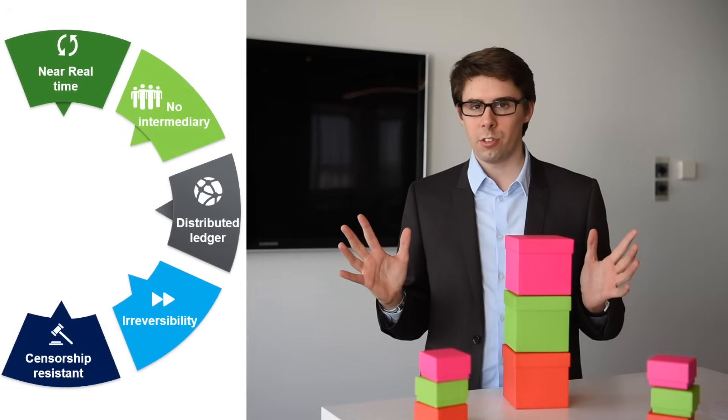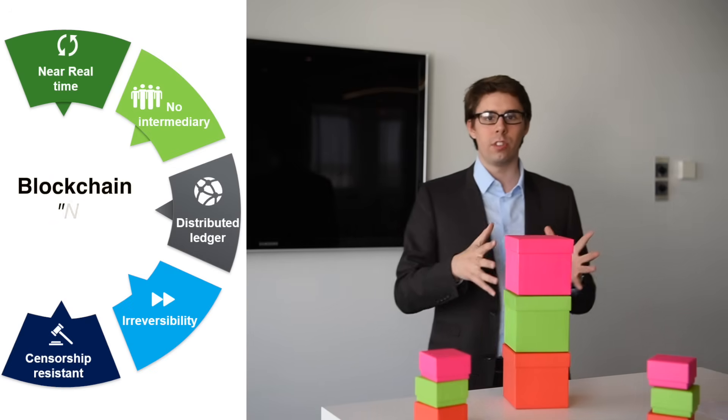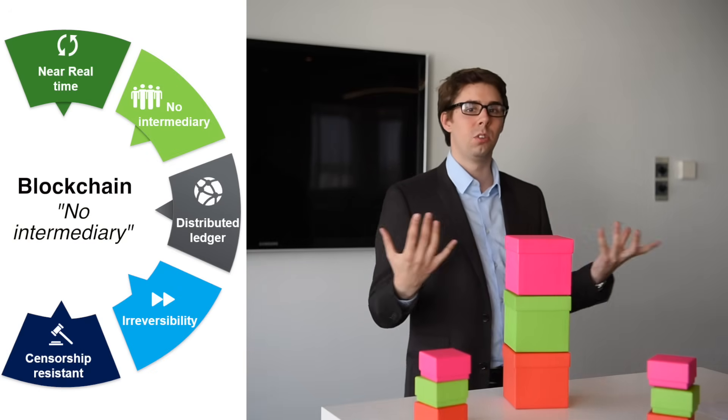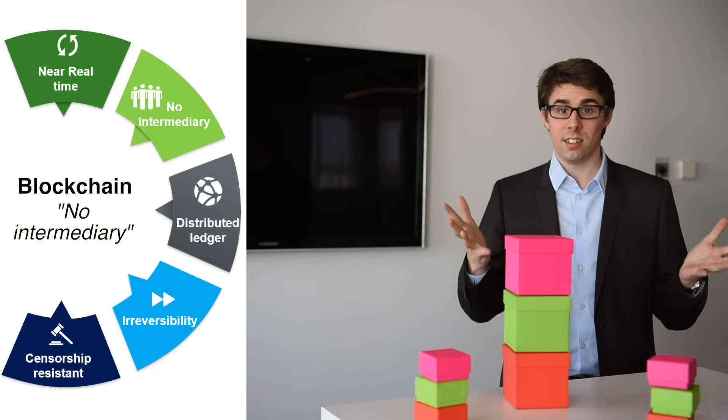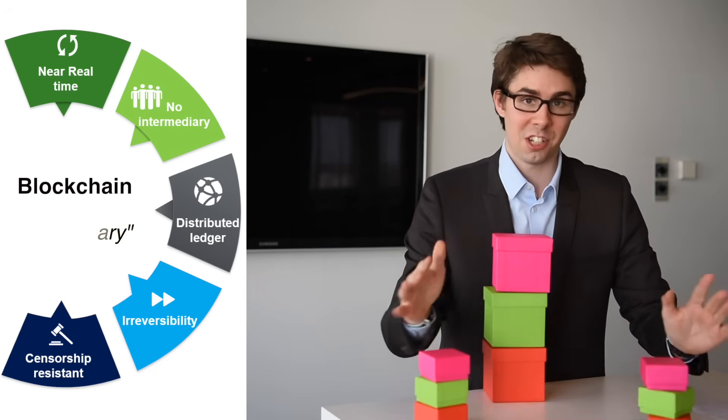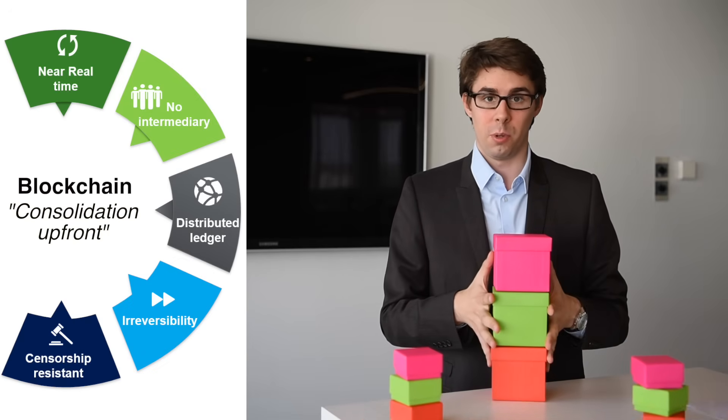So what does this mean? If you remember well, in the old system I described, we have a lot of intermediaries that all have their own accounting system that they need to consolidate with each other. In this new system, the blockchain system, you have consolidation up front, where the information is stored across blocks in real time.